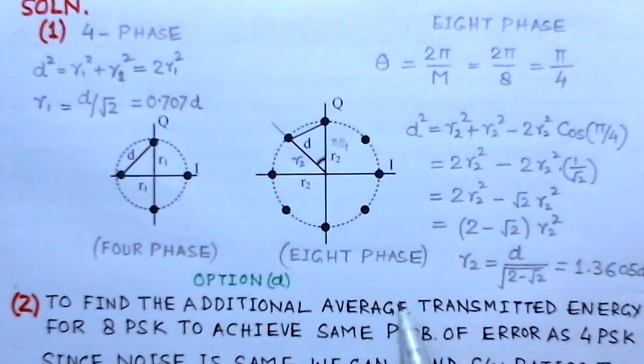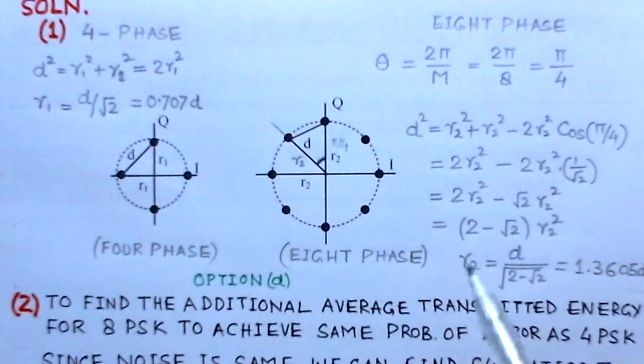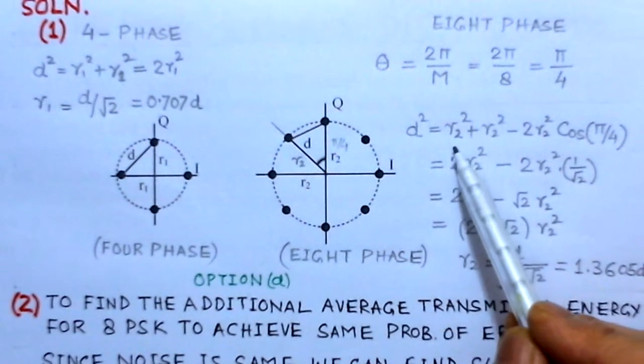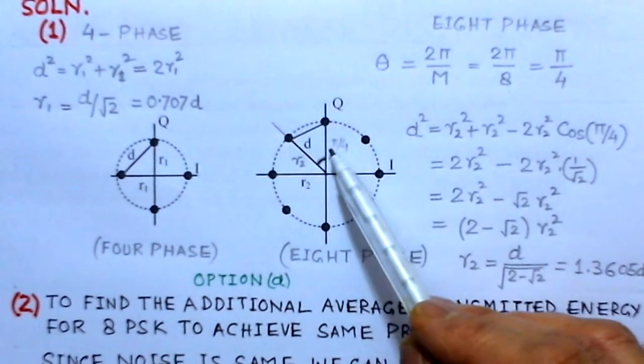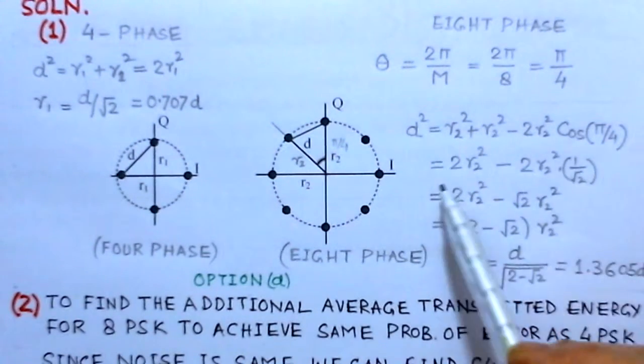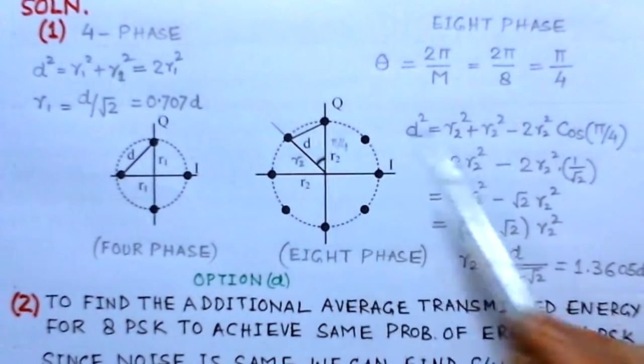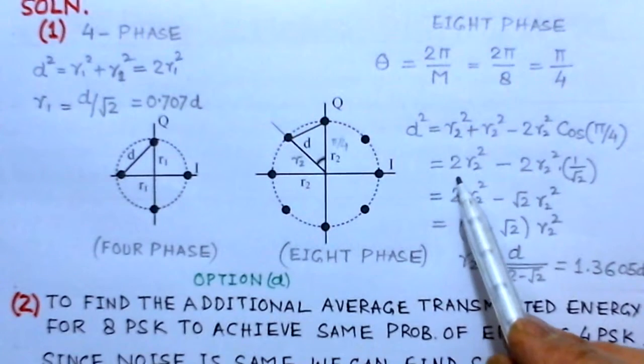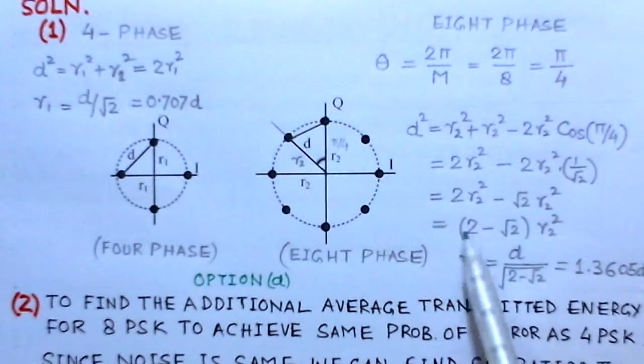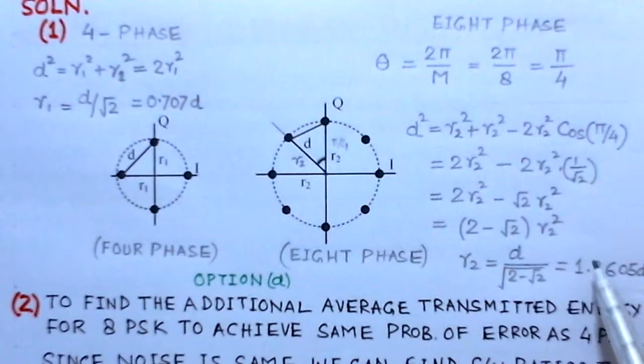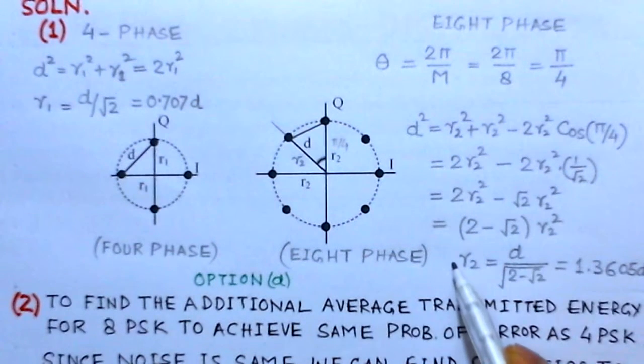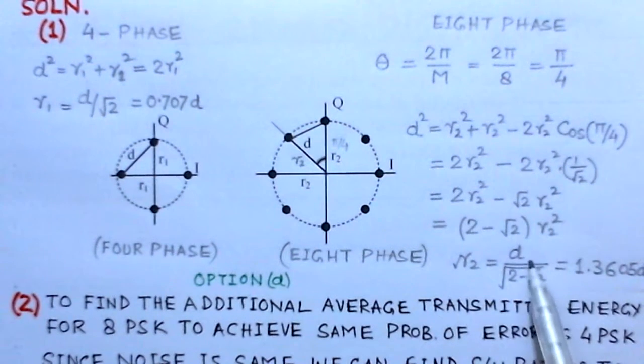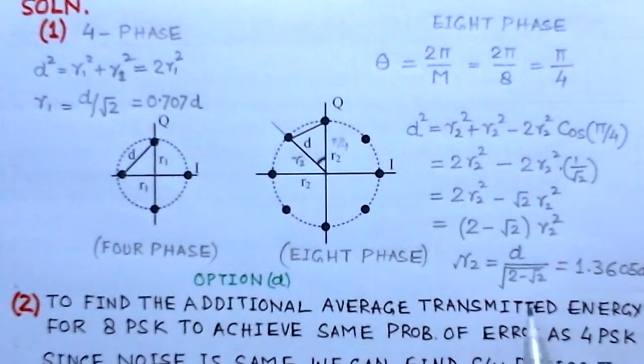Now you can find the distance d here. d square is given by r2 square plus r2 square minus 2 r2 square cos of angle pi by 4. If we simplify to 2 r2 square minus 2 r2 square times 1 over root 2 and simplify it, you get a value for r2 as d over root of (2 minus root 2), which is 1.360d. We could find the radii r1 and r2, and this corresponds to option d in the problem.